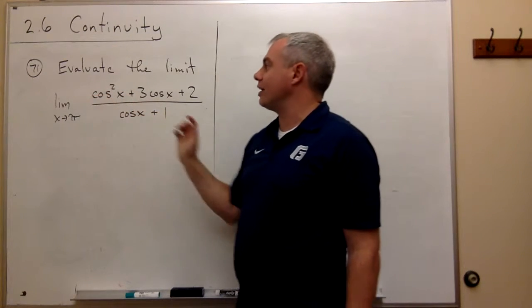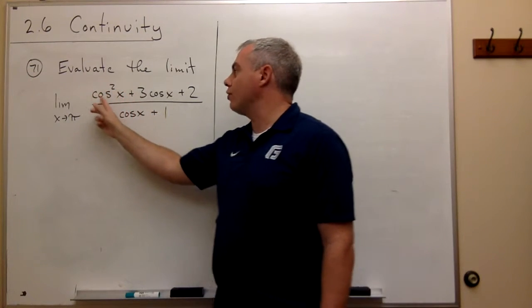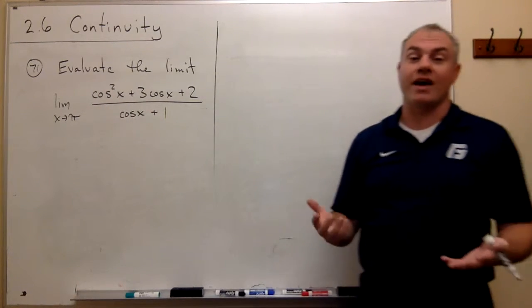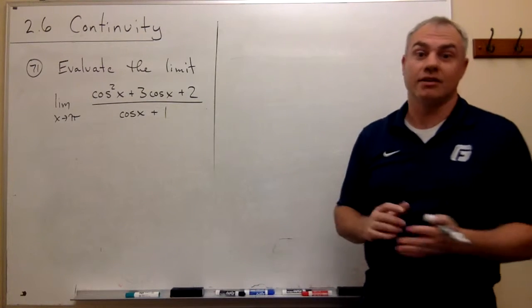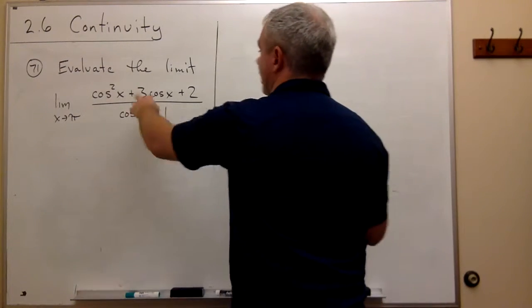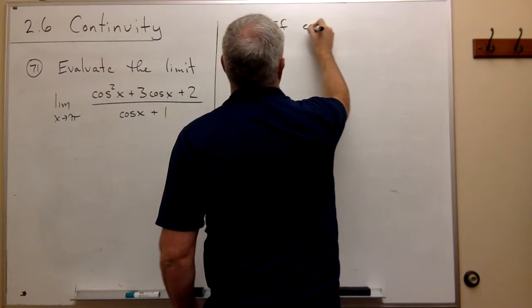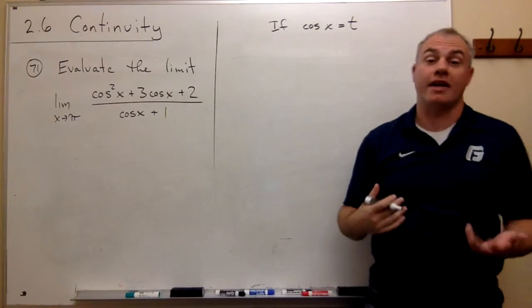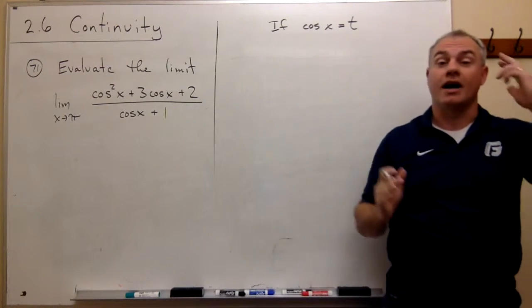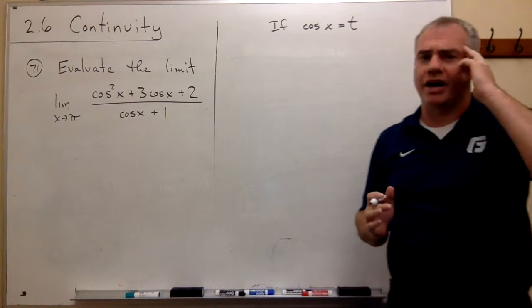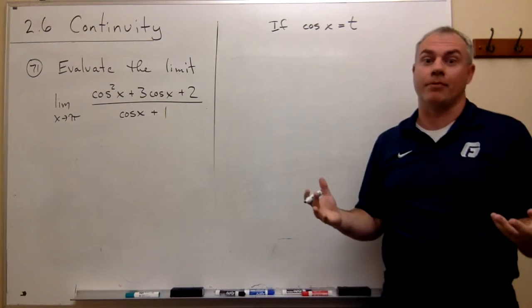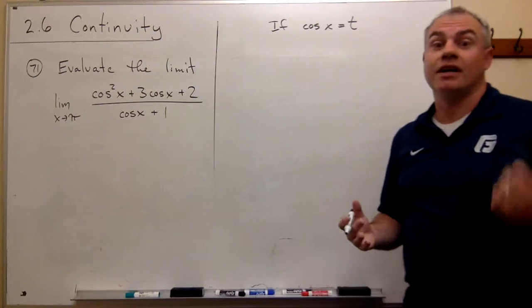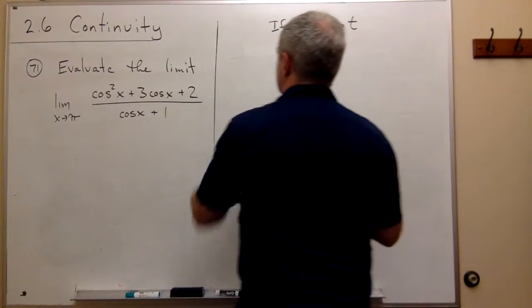Try to think about this for just a second as if cosine of x itself were a variable. So let's say that cosine of x were something like t. Now I'm not suggesting that you necessarily have to write something like this down. I'm just showing you how do I think about it. It's like if cosine of x were some other variable, then would I feel comfortable factoring this thing. And I think you would find very quickly that in fact I would feel comfortable.